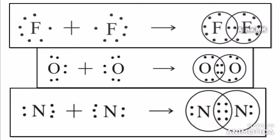Oxygen has a double bond — covalent bonding with two pairs of electrons. Nitrogen has a triple bond with three pairs of electrons. We have discussed this in this video.